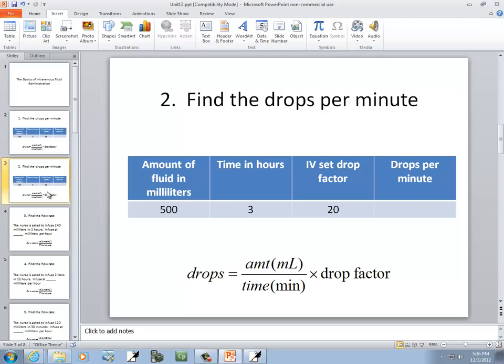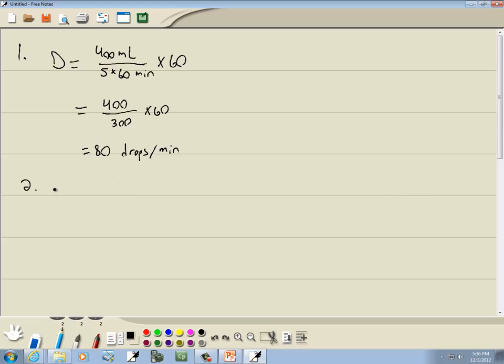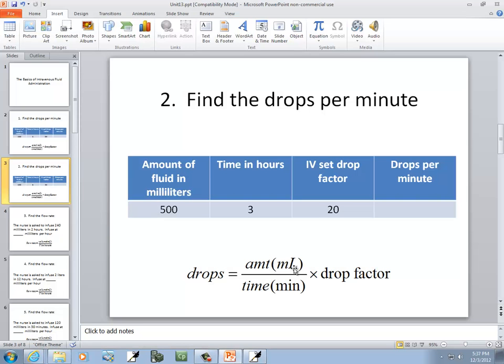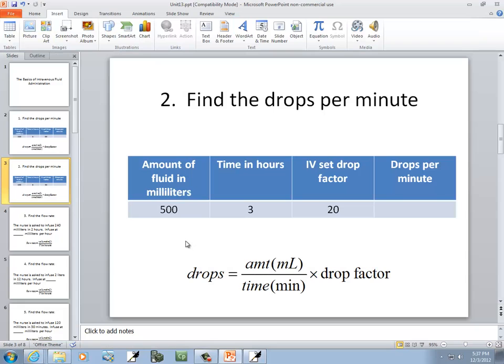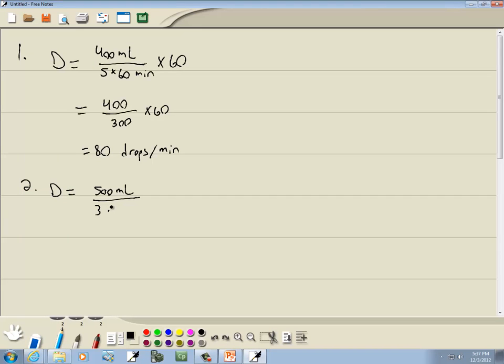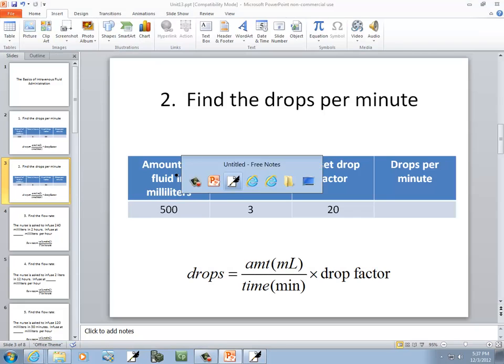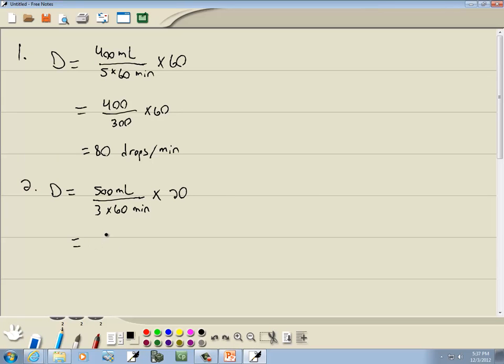Okay, next problem. Again we want our drops. The total amount here is 500, so we've got 500 milliliters over time in minutes. It's 3 hours, so we're going to have 3 times 60, and that gives us our minutes. Times our drop factor, which in this problem is 20.